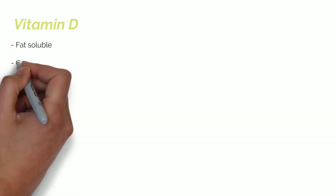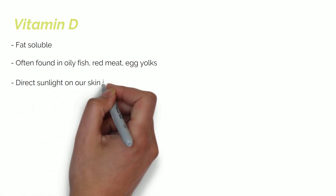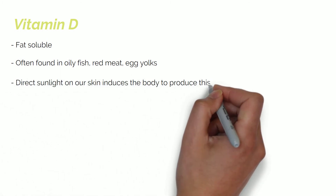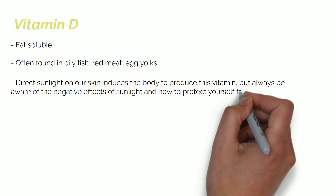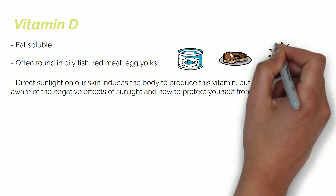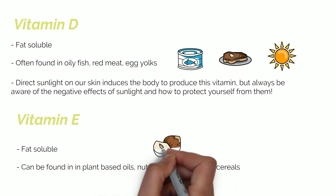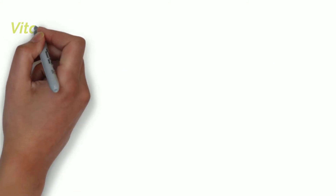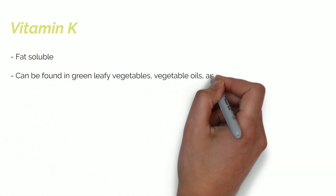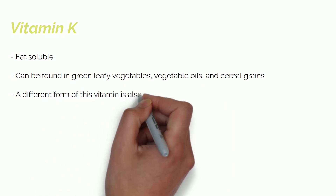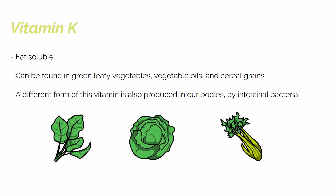Vitamin D is fat soluble and is often found in oily fish, red meat and egg yolks, and obviously from direct sunlight. Direct sunlight on our skin induces the body to produce this vitamin, but always be aware of the negative effects of sunlight and how to protect yourself from them. Vitamin E is fat soluble and can be found in plant-based oils, nuts, seeds and certain cereals. And finally, vitamin K, which is fat soluble and can be found in green leafy vegetables, vegetable oils and cereal grains; a different form of this vitamin is also produced in our bodies by intestinal bacteria.